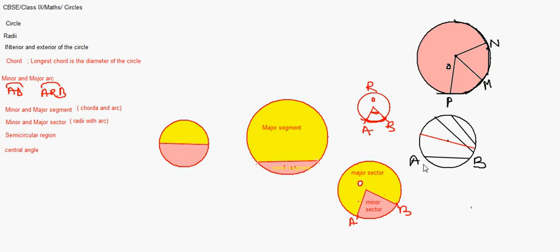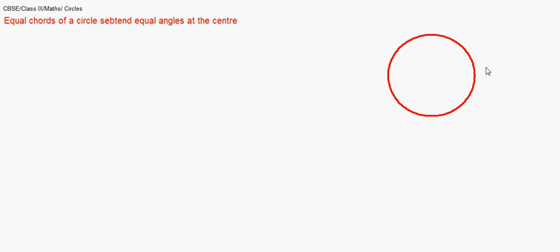Now, we move on to the first theorem under the circle. I write down the theorem first. Equal chords of a circle subtend equal angles at the center. What it means, let's draw a figure first. This is a circle. We have to draw two equal chords. It says equal chords. I am drawing two equal chords. One here. One maybe here.